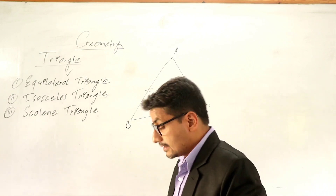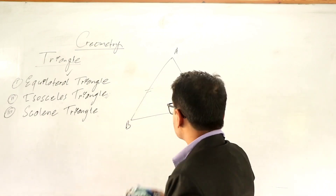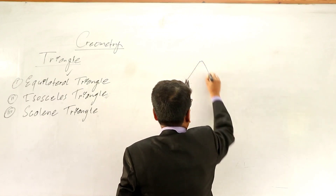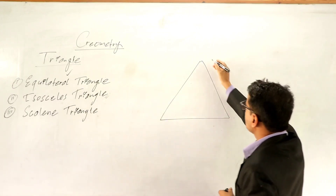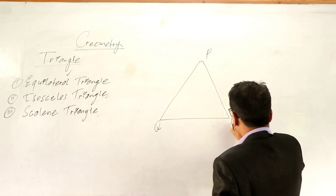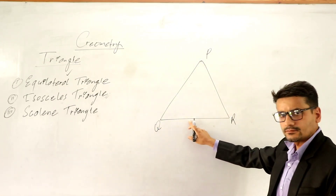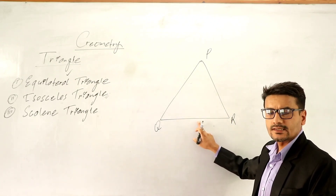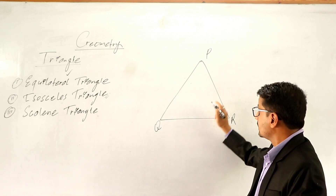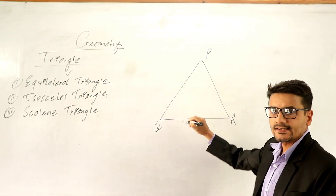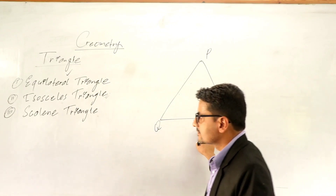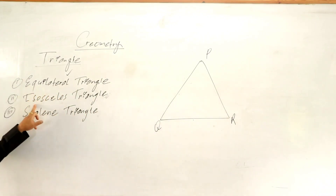Then the next is scalene triangle. What kind of triangle is called a scalene triangle? Suppose this is P, this is Q, this is R. If it is a scalene triangle, then none of the sides of a scalene triangle are equal. These three sides are not equal to each other. In that condition, we say this is a scalene triangle. So: equilateral triangle, isosceles triangle, and scalene triangle — three types of triangles are there.